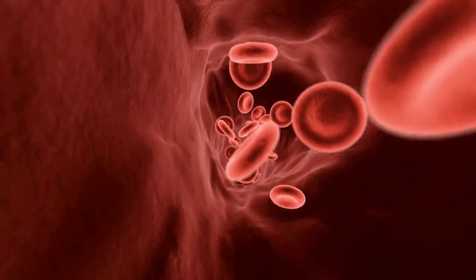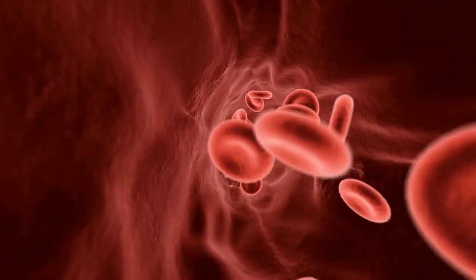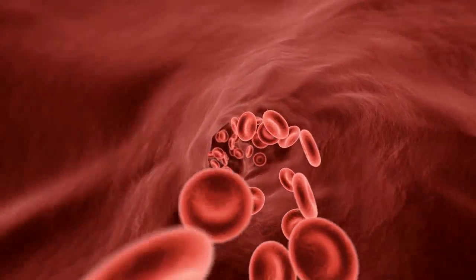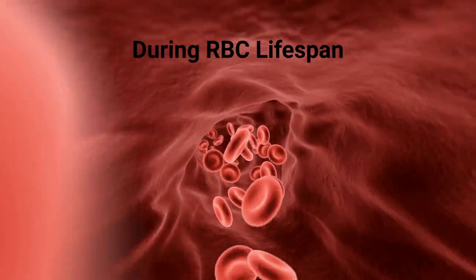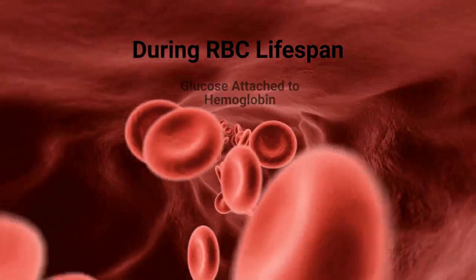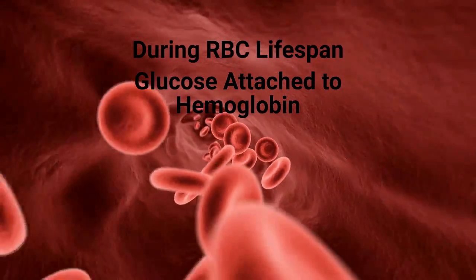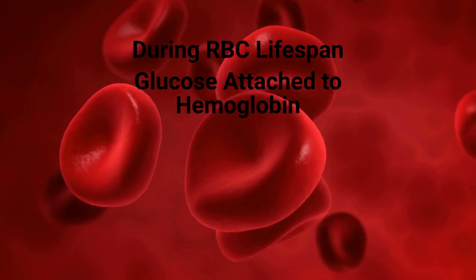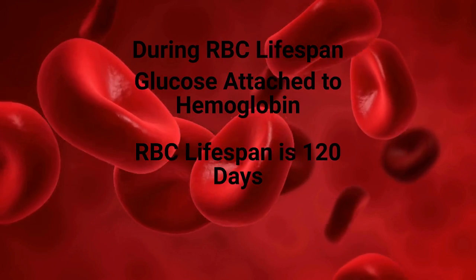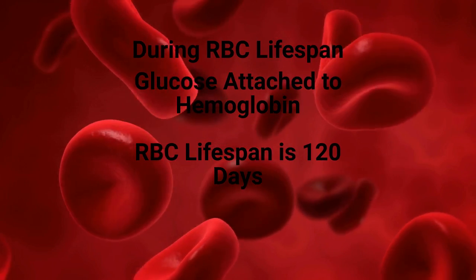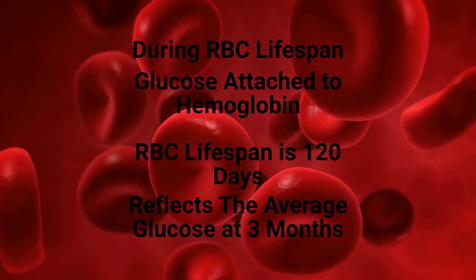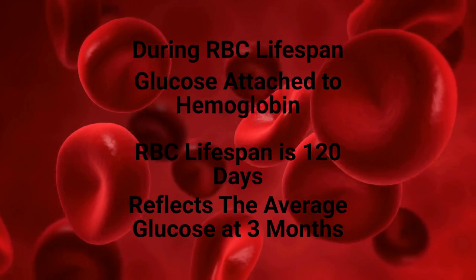New hemoglobin in red blood cells has minimal glucose attached. However, during a red blood cell's lifespan, glucose enters the blood cells and is attached to the hemoglobin. Because a red blood cell's lifespan is 120 days, the percentage of hemoglobin with glucose attached reflects the average glucose exposure in the past three months.